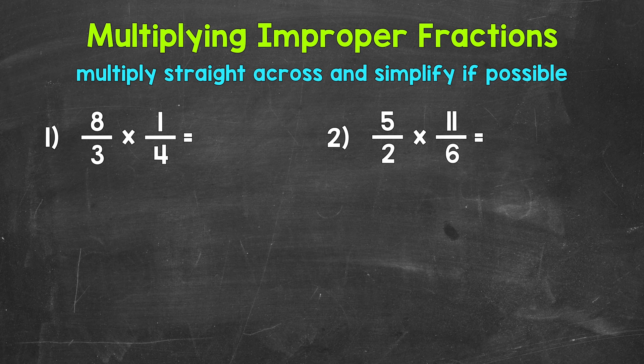so numerator times numerator, the top numbers, and then denominator times denominator, the bottom numbers, and then simplify if possible.